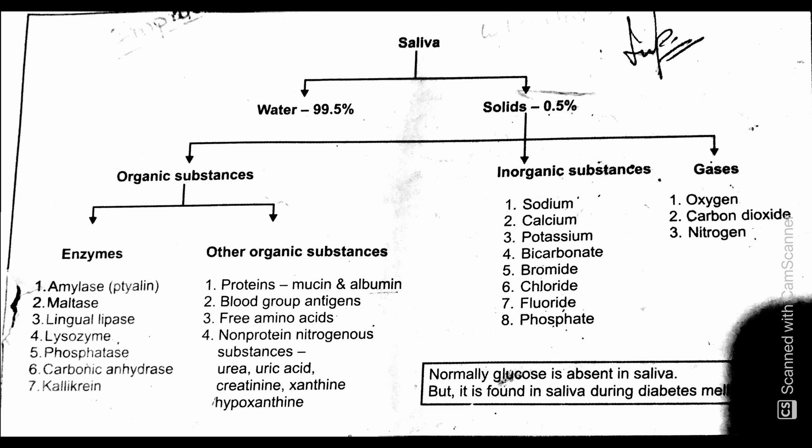The second category is other organic substances. These include proteins such as mucin and albumin, blood group antigens, free amino acids, and non-protein nitrogenous substances such as urea, uric acid, creatinine, xanthine, and hypoxanthine. These are the other organic substances found in the solid component of saliva.